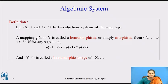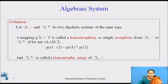Moving on to some more definitions based upon the algebraic system. Let (X, ·) and (Y, ★) be two algebraic systems of the same type. Then a mapping g: X → Y is called a homomorphism or simply morphism from (X, ·) to (Y, ★) if, for any x1, x2 belonging to X, g(x1 · x2) = g(x1) ★ g(x2). Here the left-hand side uses the · operation and the right-hand side uses the ★ operation, and (Y, ★) is called a homomorphic image of (X, ·).